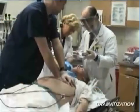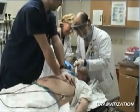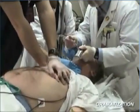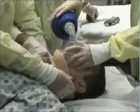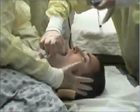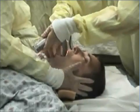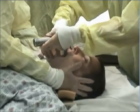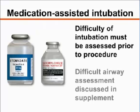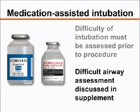In emergent cases, such as cardiac arrest, airway management is of paramount importance and there are very few contraindications to orotracheal intubation. Unstable cervical spine injury is not a contraindication, but intubation must be performed with strict in-line stabilization of the cervical spine. If neuromuscular blocking agents or sedatives are used to facilitate intubation, the difficulty of intubation must be assessed and planned for before proceeding. This assessment is discussed in more detail in the accompanying written supplement.